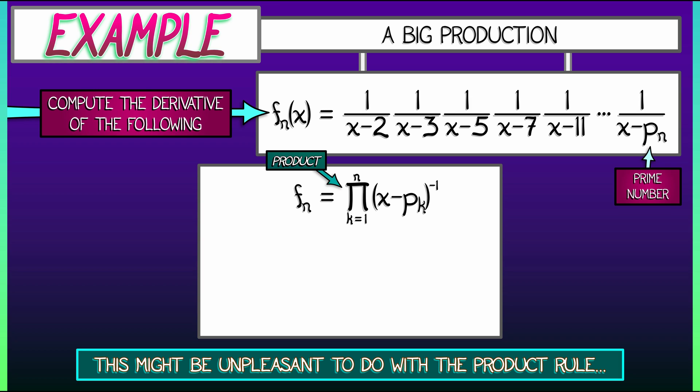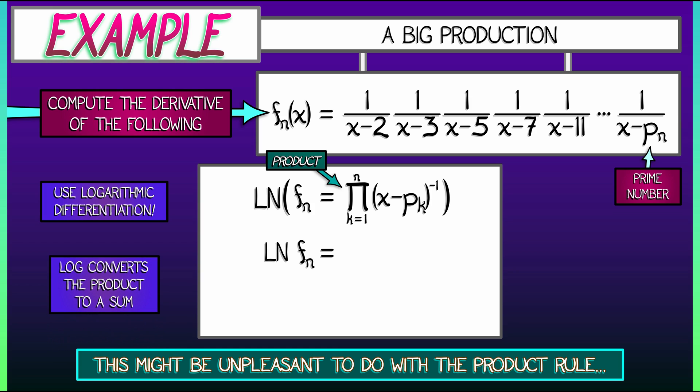And now we're going to use logarithmic differentiation. Applying the log to both sides of this is really going to be helpful. On the left, we have log of fn. On the right, what do we have? Here's the thing. The log converts that product into a sum. Recall your logarithm laws. So on the right, we have the sum k goes from 1 to n of log of x minus p sub k to the negative 1. But I can pull that negative 1 exponent out in front again by logarithm laws.